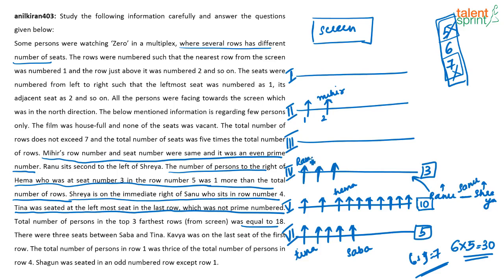So in row 4: seat 1 is Ranu, seat 2 is Sanu, and seat 3 is Shreya. These 3 rows — rows 4, 5, and 6 — are now finalized. The top 3 farthest rows means rows farthest from the screen, which matches rows 4, 5, and 6 as described in the question.